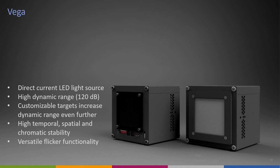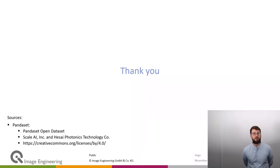To summarize: Vega is a direct current LED light source with a very high dynamic range of 120 dB for the light source alone — and even higher with customizable targets. It provides high temporal, spatial, and chromatic stability, and is a very versatile light source with flicker functionality. Thank you very much for listening, and thank you to the image sources. That's it for me today.